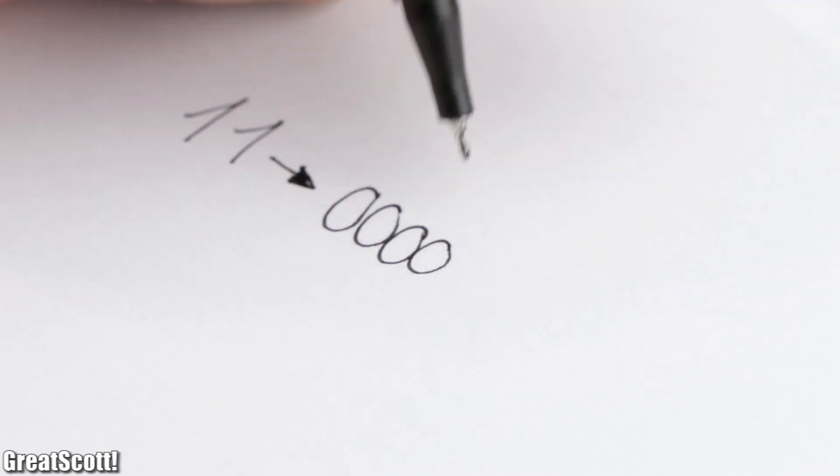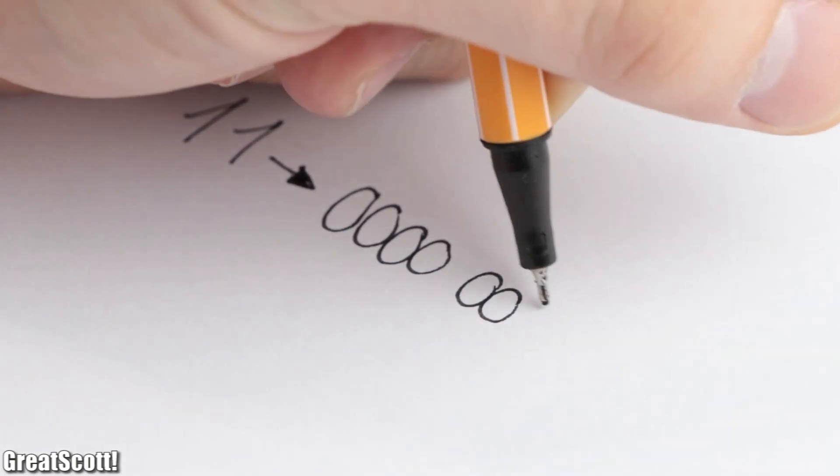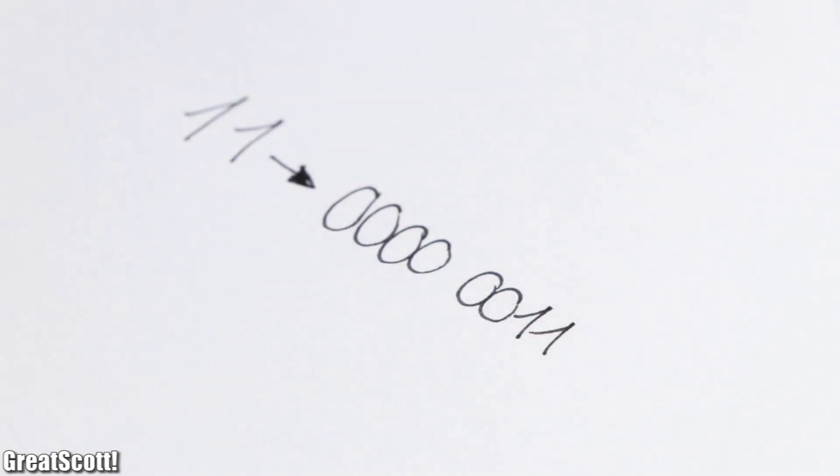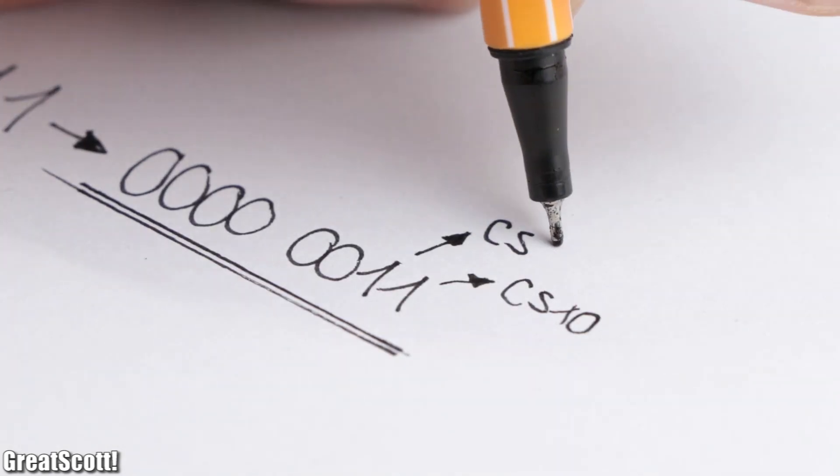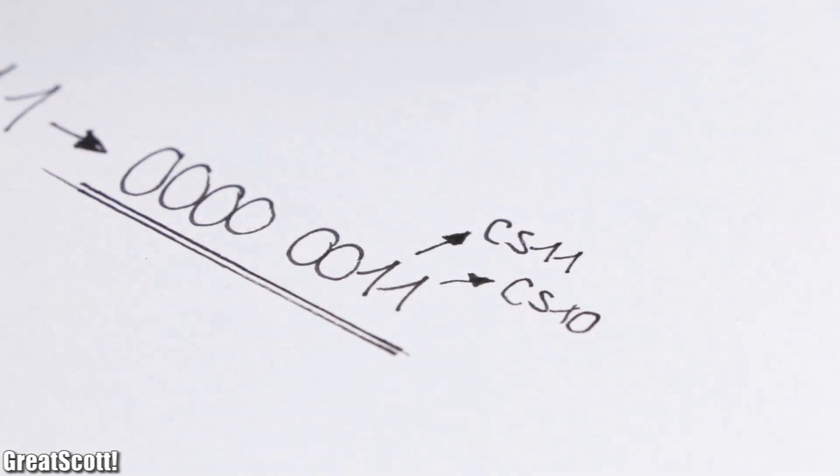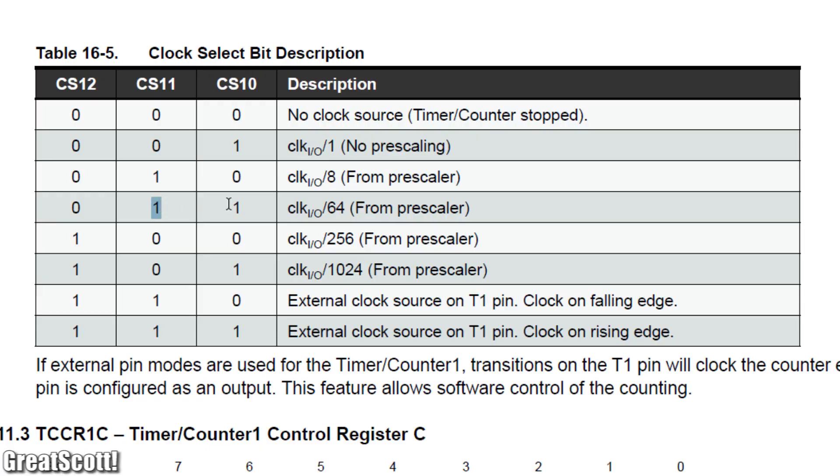As a complete byte though this would equal 6 zeros with 2 ones at the end. That means CS10 and CS11 were 1, which according to the clock select table equates a prescaler of 64.